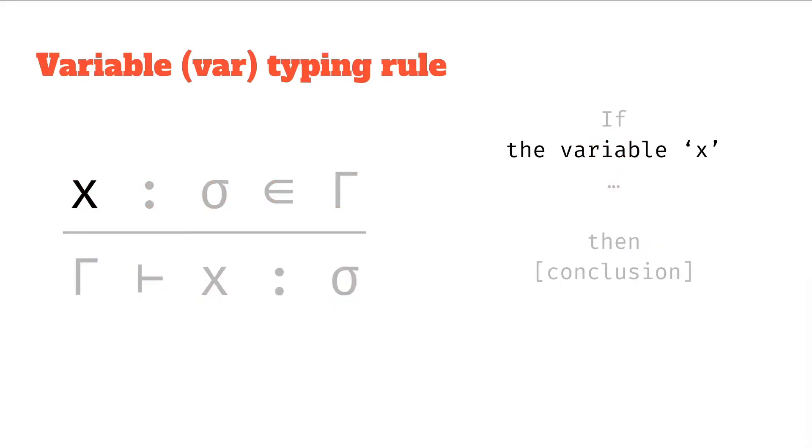So let's dig into that premise. Well we have that variable x, and we said the colon means has type, and then next we can say the polytype sigma.